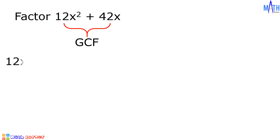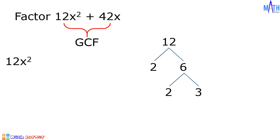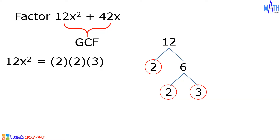Let us begin with 12x squared. The numerical coefficient is 12, and 12 is equal to 2 times 6, and 6 is equal to 2 times 3. It means that 12 is equal to 2 times 2 times 3. For the variable, x squared is equal to x times x. And 12x squared is equal to 2 times 2 times 3 times x times x.